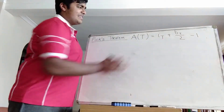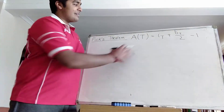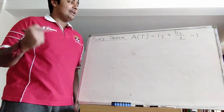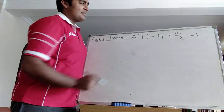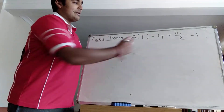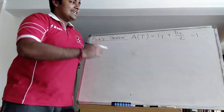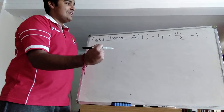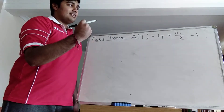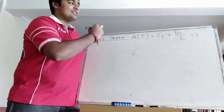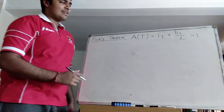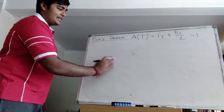This is what the theorem is. The area of T, where T is a polygon, is equal to I(T) plus B(T) over 2 minus 1, where I(T) is the number of interior points of T, and B(T) is the number of integer points of T on the boundary. So let me just give you an example.